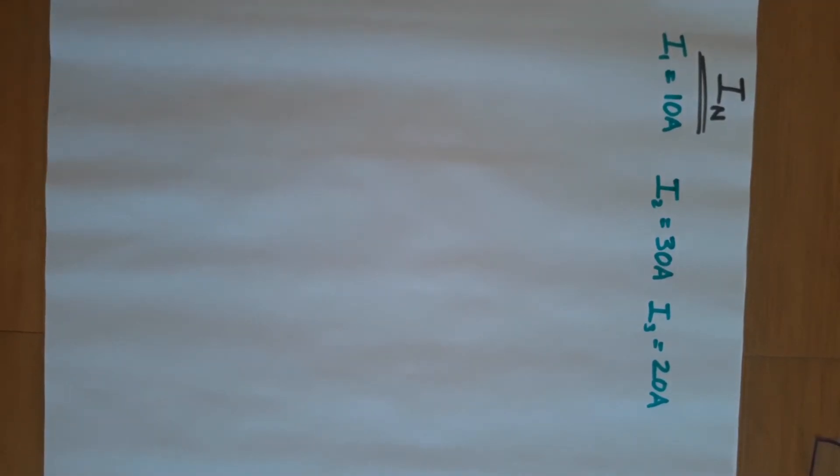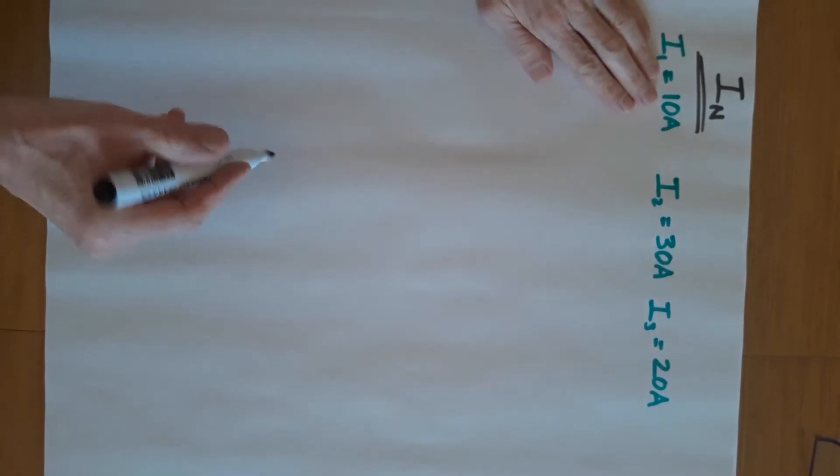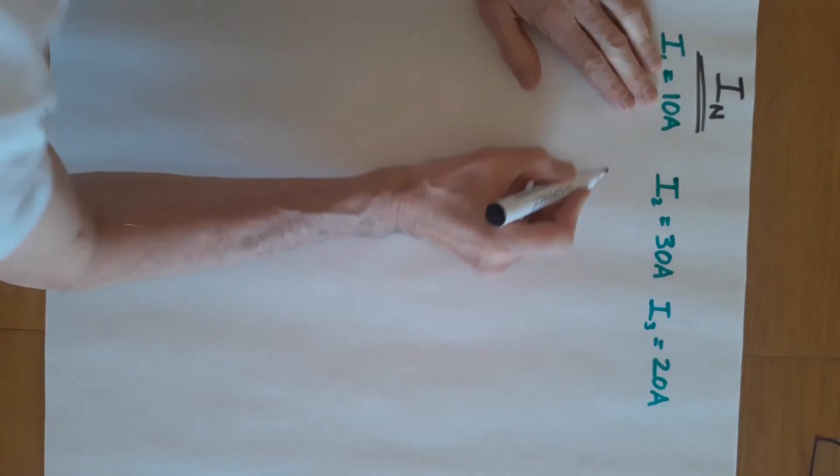We're going to do a simple scaled diagram. I stress it must be scaled - you're going to need a ruler and a protractor to do this accurately. So step one, we take the first current which is 10 amps. You need to decide a scale that would enable you to fit your diagram onto your paper, and we're going to draw a line proportional to 10 amps.